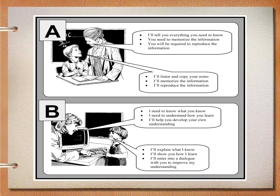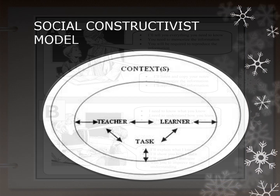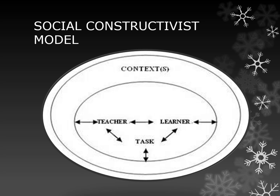As an example: a teacher says, 'I'll tell you everything you need to know; you need to memorize the information; you will be required to produce the information.' The learner responds, 'I'll listen and copy notes; I'll memorize the information; I'll reproduce the information.' What you incorporate into learners will be the result they produce — this teacher-learner interaction is a circular motion.